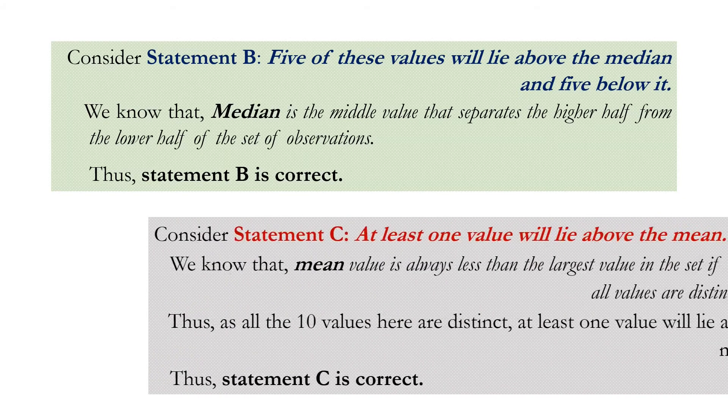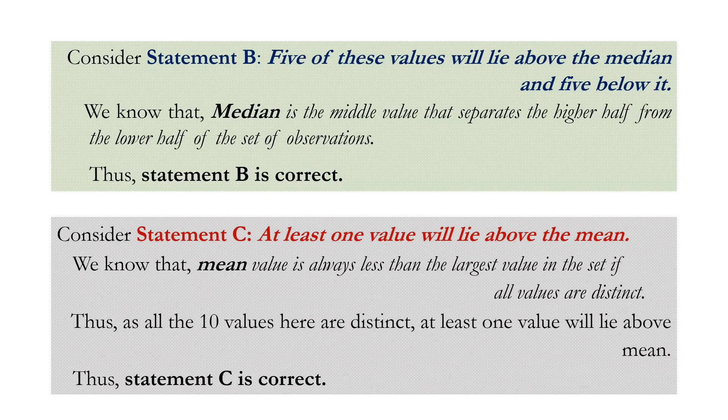Now consider statement C. It tells that at least one value will lie above the mean. We know that mean value is always less than the largest value of the set if all the values are distinct. Here all the 10 values are distinct, therefore at least one value will lie above the mean. Thus statement C is correct.